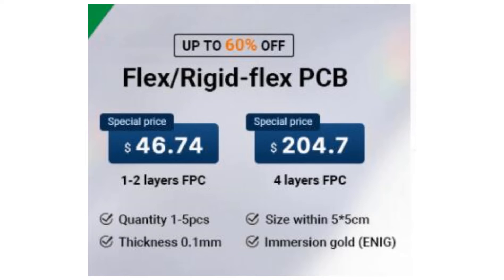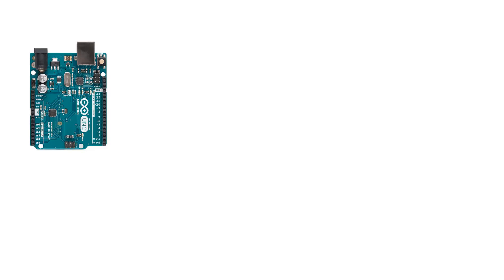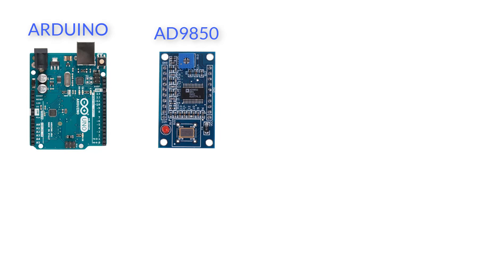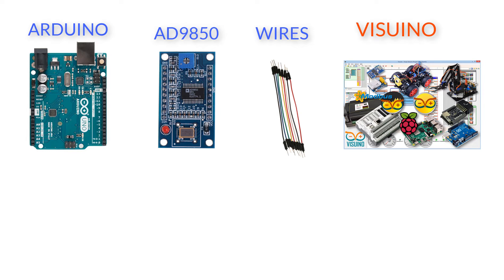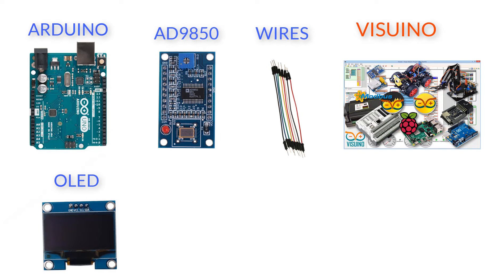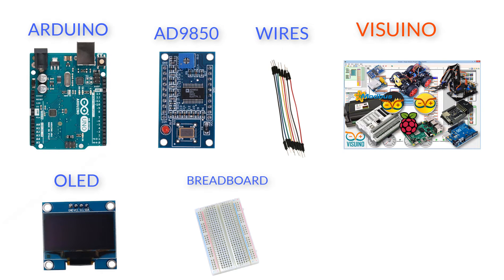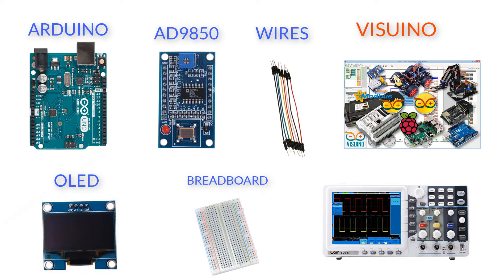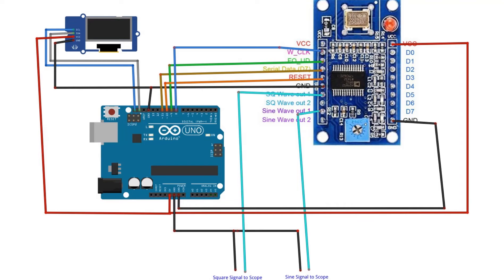For this project you need an Arduino board or any other compatible board, an AD9850 module, some jumper wires, the Visuino program, an OLED display, a breadboard, and an oscilloscope to see the signal. Wire everything according to the schematic.